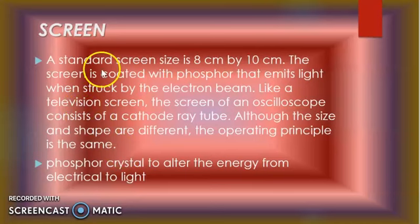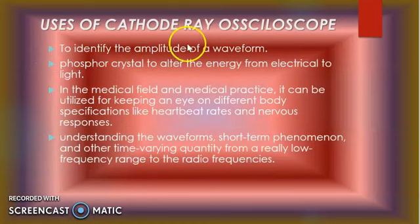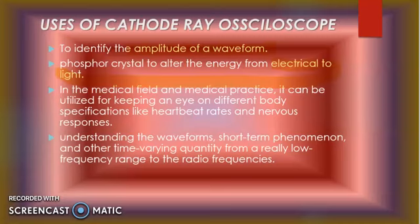Uses of CRO: First, CRO is used to measure the amplitude and wavelength of any waveform. Second, it converts electrical signals into light signals. Third, in the medical field, it can be used to monitor the heartbeat or the nervous system — what we call a cardiograph. Fourth, it is used to study short-term phenomena such as radio frequencies where timing is very short.